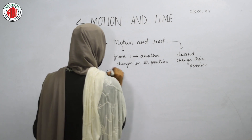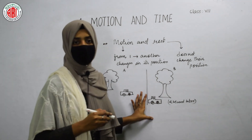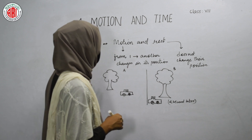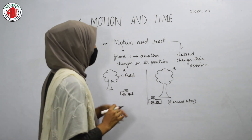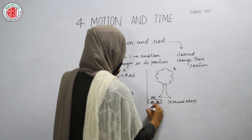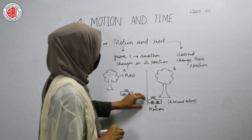Here is a picture. When we observe these pictures, we can clearly say that the position of the car changes after two seconds — the change in position can be observed after a period of time with respect to its surroundings. But when we observe the tree, the tree remains in its own position even with respect to its surroundings. So the tree is at rest and the car is in motion.